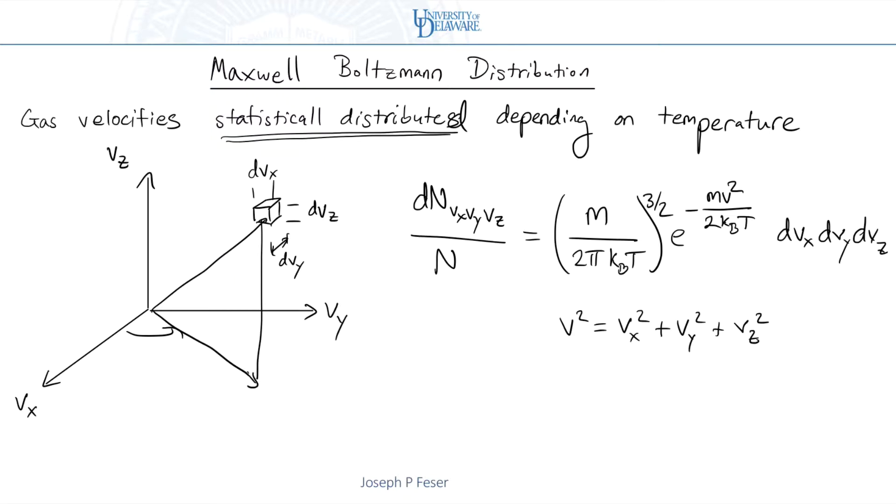Okay, so a typical way that we'll use this will be to convert it into polar coordinates. So I will define my polar coordinates in this way. And then that would mean that this is V. So if I define my spherical polar coordinates in that way, I can rewrite this as M over 2 pi KBT to the 3 halves times E to the minus MV squared over 2 KBT times the factor that comes out when you change coordinate systems. So that would be V squared sine phi D phi D theta D V.